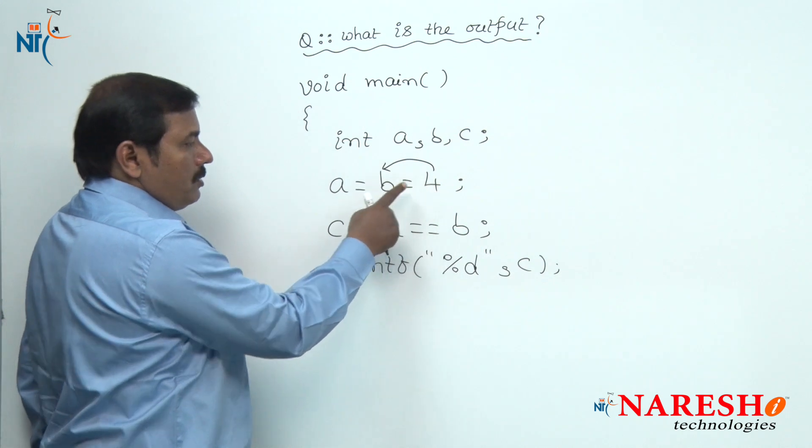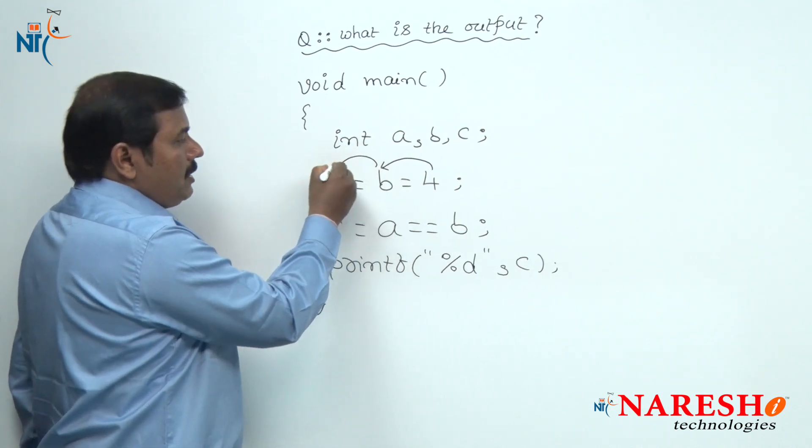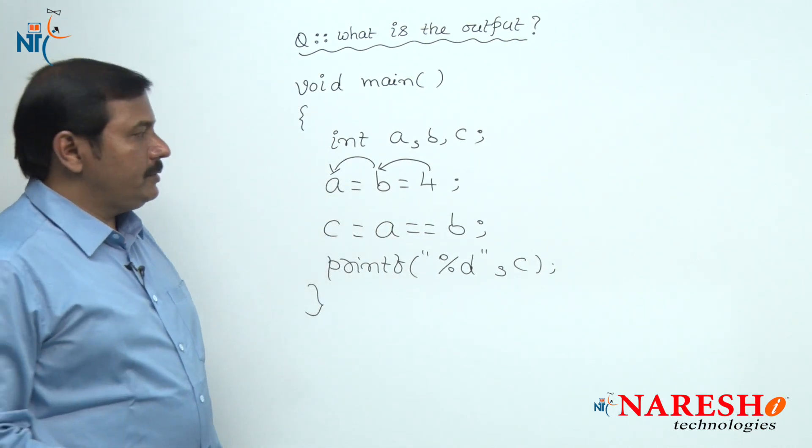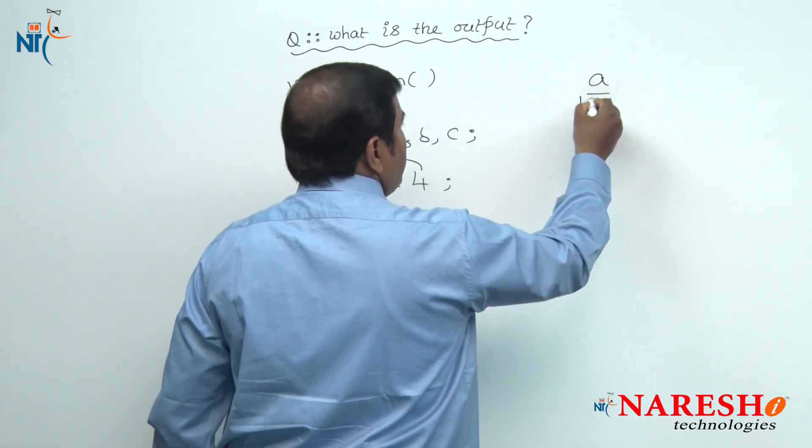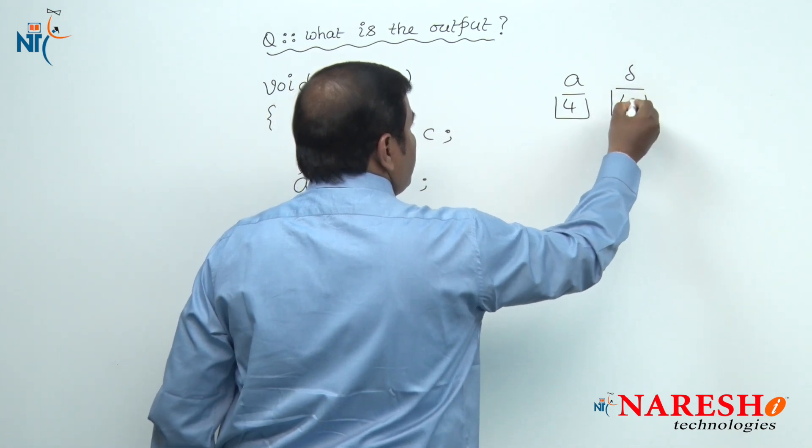The value 4 is first stored inside variable B, and then the value of variable B, which is 4, is assigned to variable A. So the value of variable A is 4 and the value of variable B is 4.